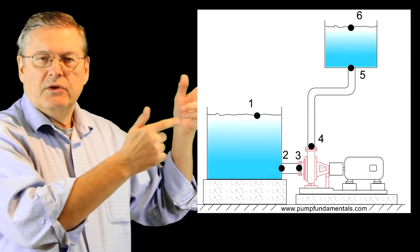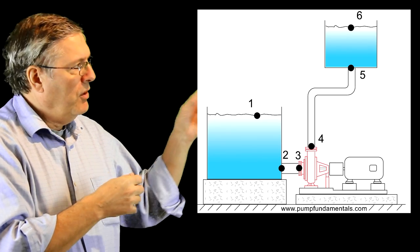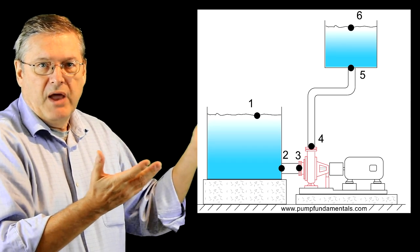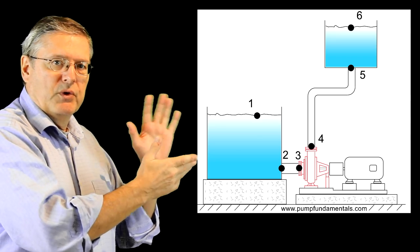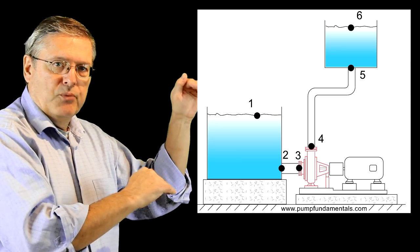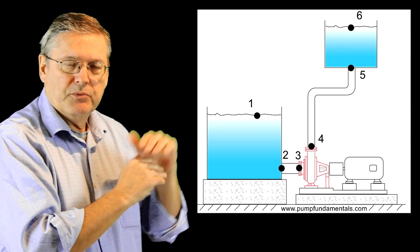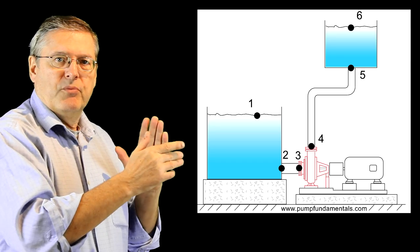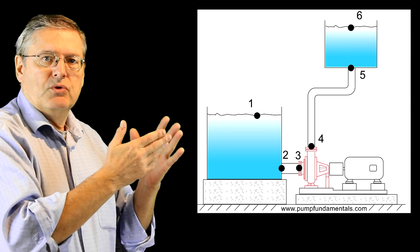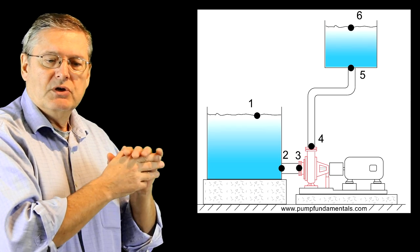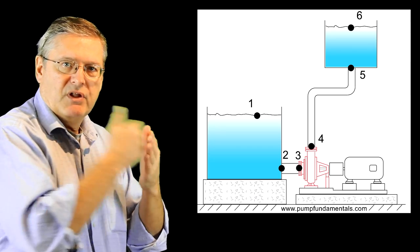We're going to look at all these points to discuss what the pressure or head would be. Point one is the surface of the tank — that's atmosphere, so the pressure is zero. Point two is right before the suction, at the outlet of the tank, so the pressure corresponds to the height of liquid there. Point three is right before the pump; between two and three we're at the same height, so three essentially has the same pressure as two.